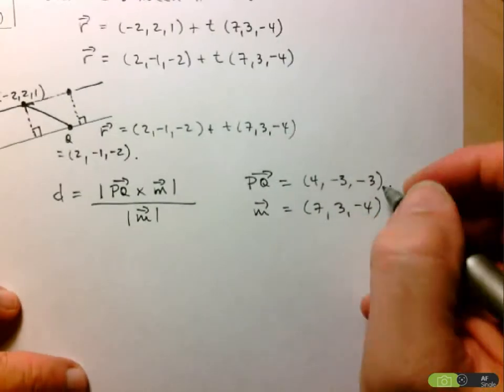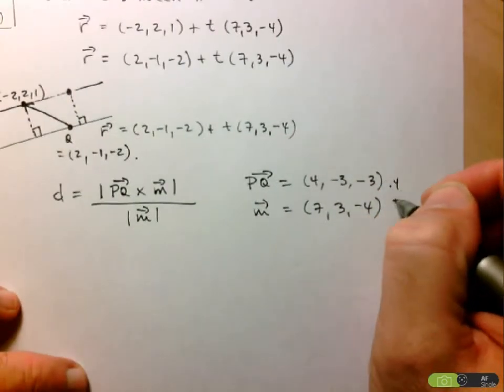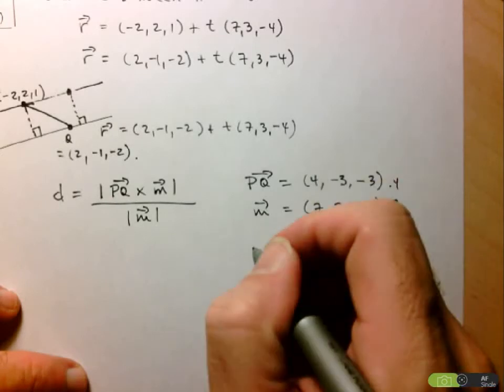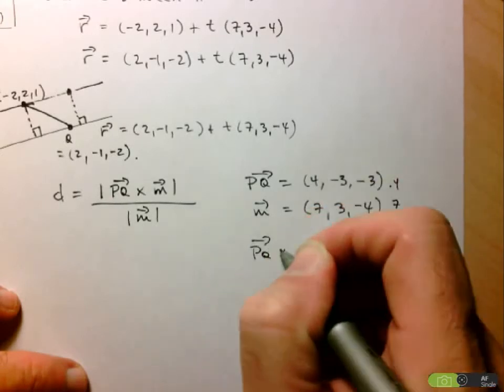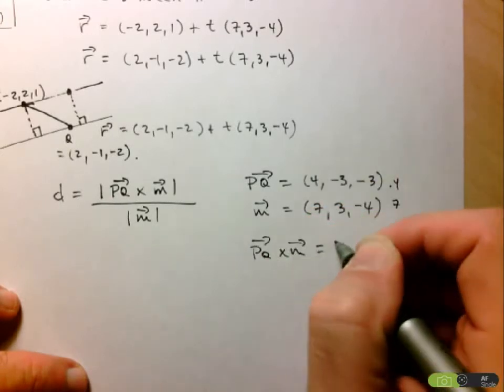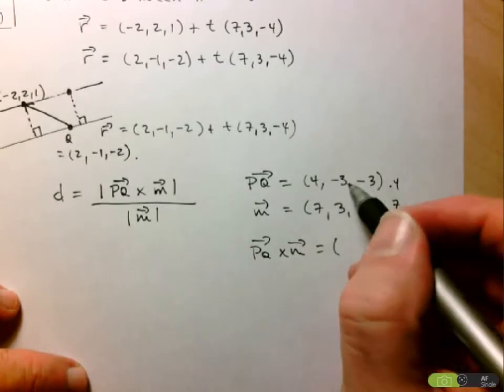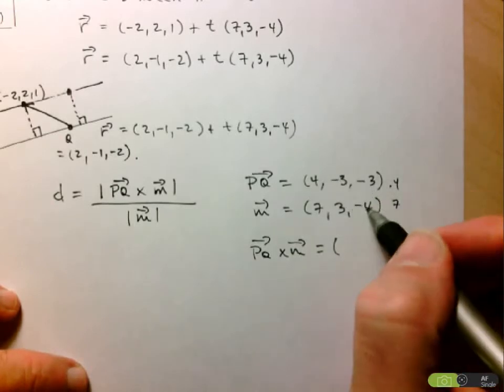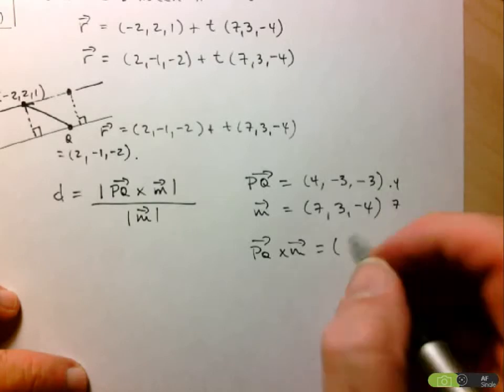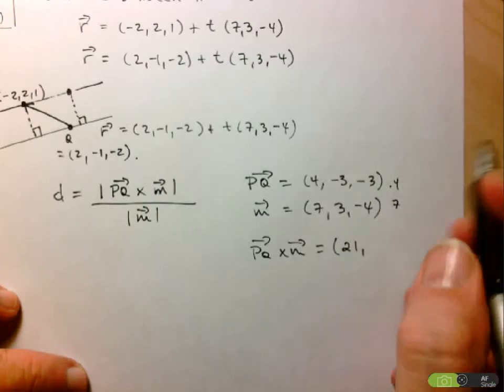And let's find the cross product of these. So 4 and 7. And so the cross product, PQ cross M, will be equal to, so here we have 12 minus negative 9. So 12 plus 9 is 21.